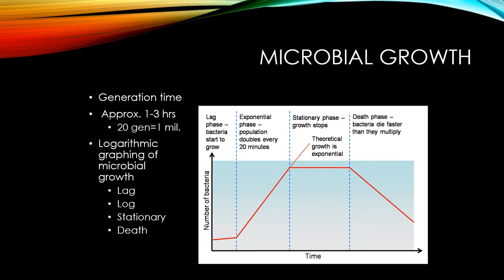The logarithmic graphing of microbial growth represents the progression of microbial growth, expressing cell numbers typically in powers of two — because two refers to the doubling time. There are four phases of bacterial growth: the lag phase, the log phase (or logarithmic phase), the stationary phase, and the death phase.